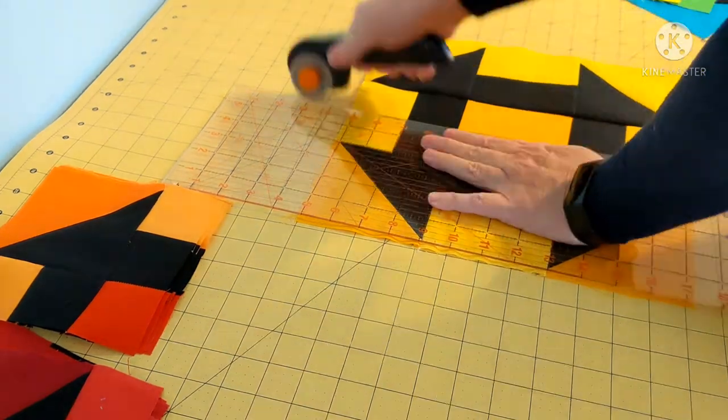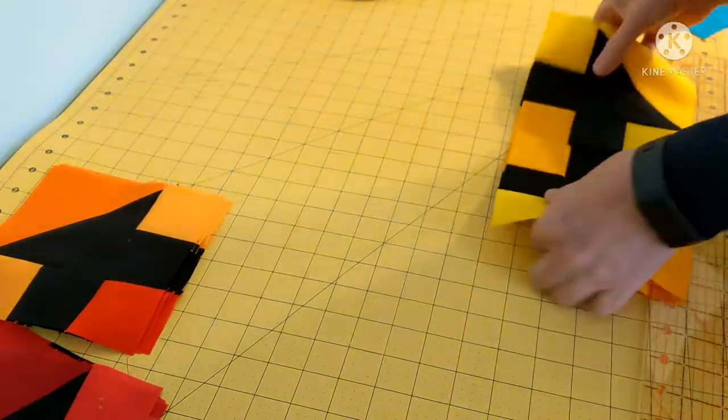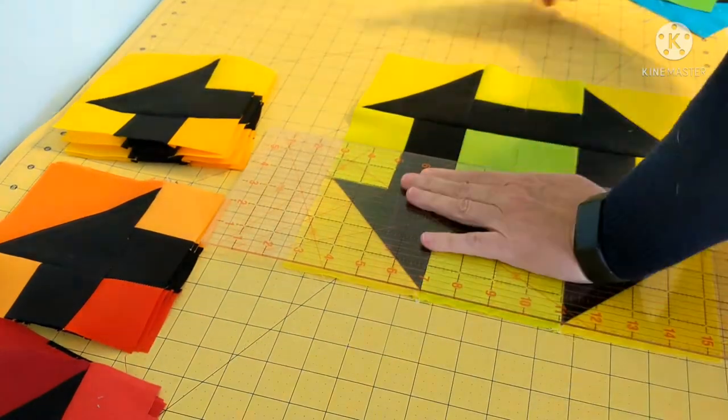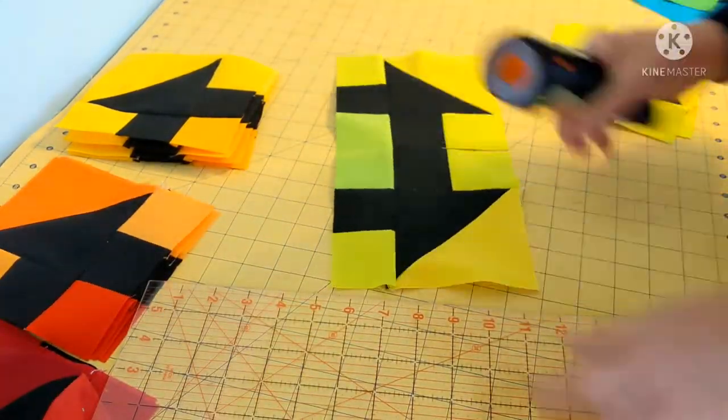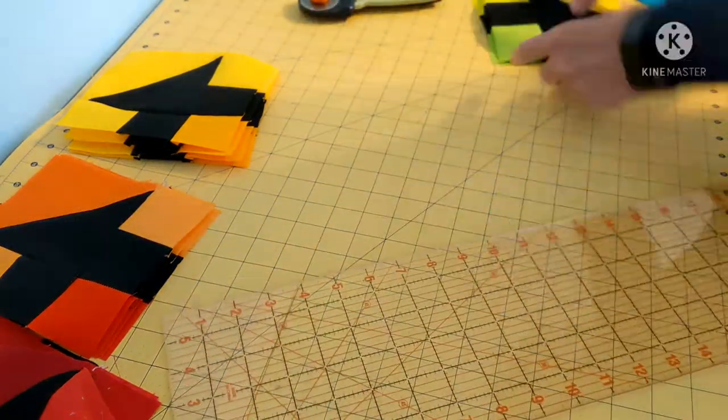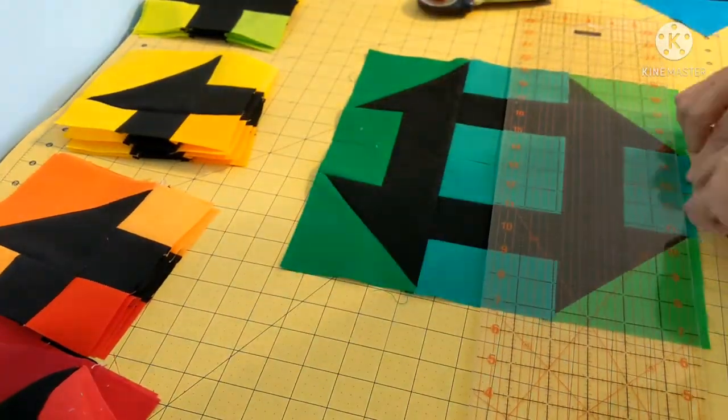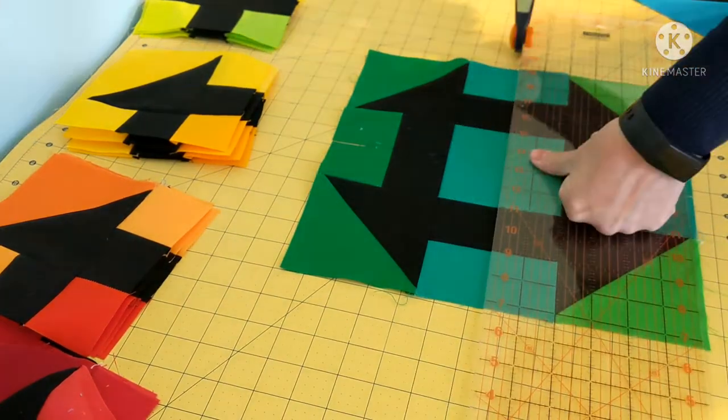After you have all of your churn dashes constructed, you're going to cut them into fourths. So measure the two inches across the center of your middle block and just repeat for all of the colors.